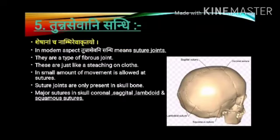Tuna Sevani Sandhi: In the modern aspect, Tuna Sevani Sandhi means suture joints. They are a type of fibrous joints. These are just like stitching on a cloth. A small amount of movement is allowed at a suture. Suture joints are only present in the skull bone. Major sutures in the skull are coronal, sagittal, lambdoid, and squamous.